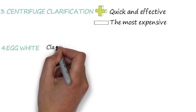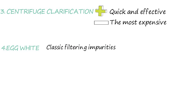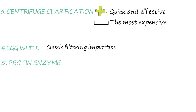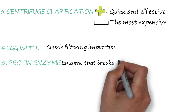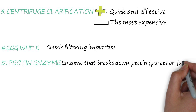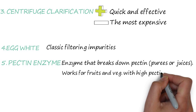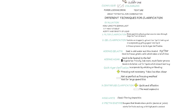Egg white is used traditionally to filter impurities from liquids. Pectin enzyme: pectin holds fruits together and there exist enzymes which break down the pectin, so this method works very well for fruits and vegetables with high pectin content.